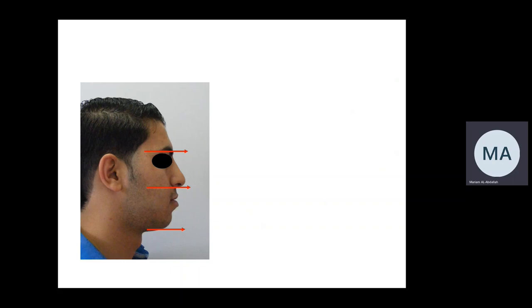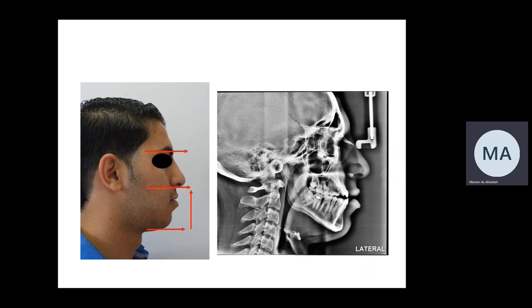An example: a patient who appears almost class one skeletal pattern extra-orally but has increased vertical proportions and posterior growth rotation. The cephalogram shows A point and B point almost flush — mild class three skeletal pattern — whose severity was reduced by posterior growth rotation. However, this increased the difficulty because of increased maxillomandibular angle, anterior open bite tendency, incompetent lips with averted lower lip, all producing a more difficult malocclusion to treat.